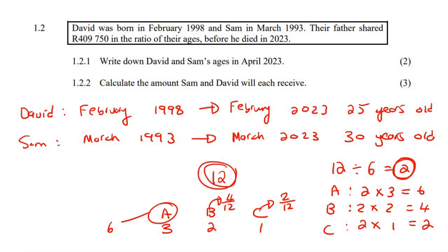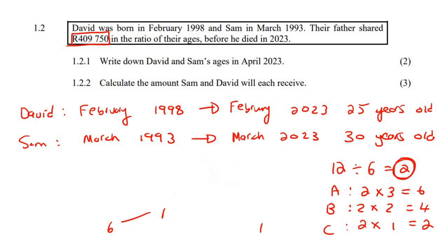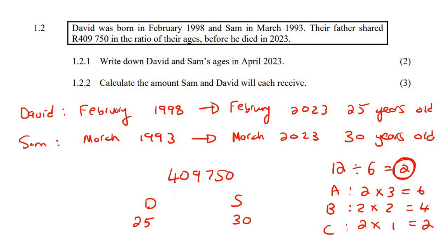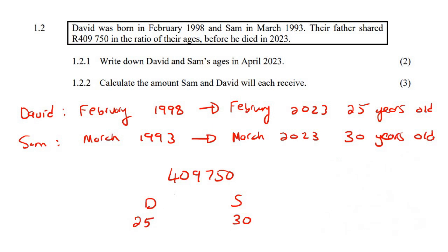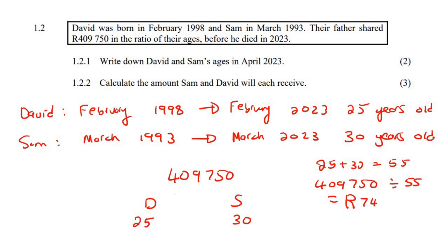Now applying this to our problem: 409,750 Rand is being split between David and Sam in the ratio of their ages — David is 25 and Sam is 30. Adding those together gives 55. So we calculate 409,750 divided by 55, which gives us a unit value of 7,450 Rand.